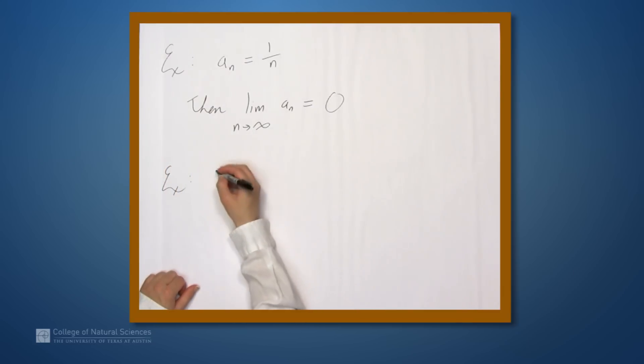Another example. So let's say that a_n equals n² - 5 over 3n² + 1. Then the limit as n goes to infinity of a_n, the limit of our sequence, is what?